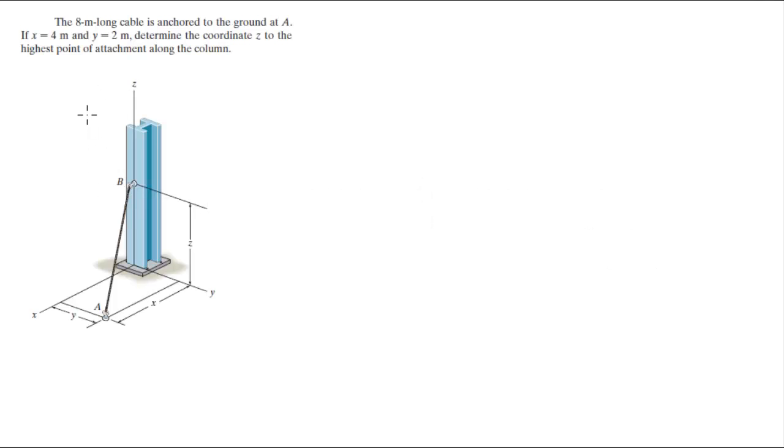Alright guys, now we're going to do this problem that says the 8-meter long cable is anchored to the ground at point A right here. If x equals 4 and y equals 2, determine the coordinate C to the highest point of attachment along the column.